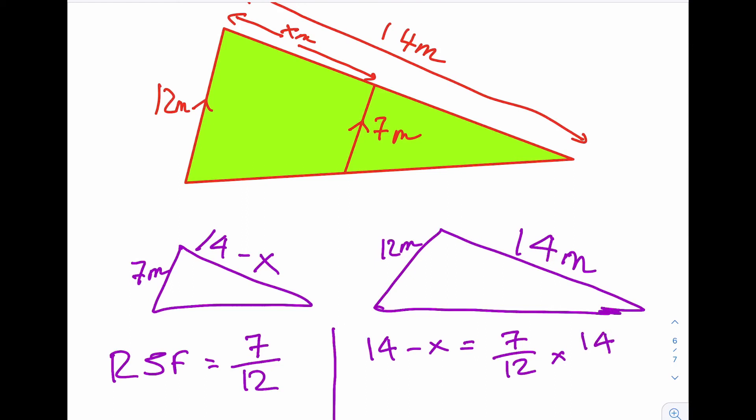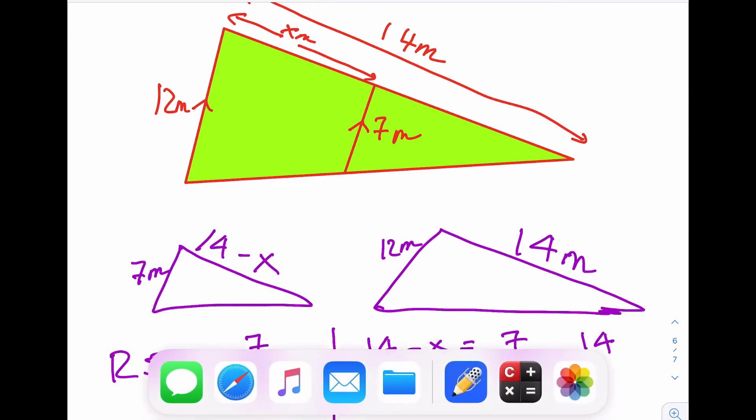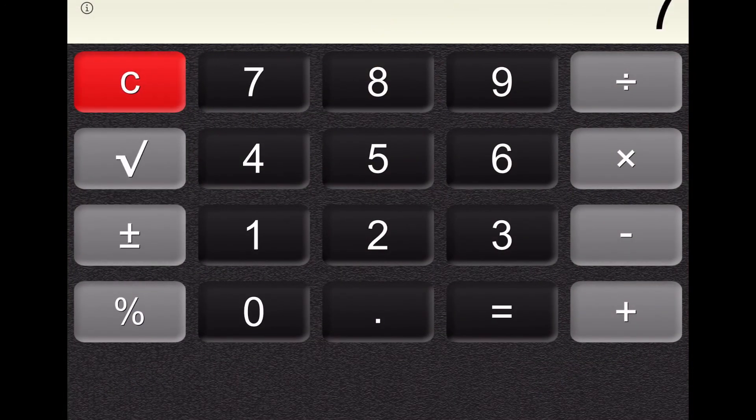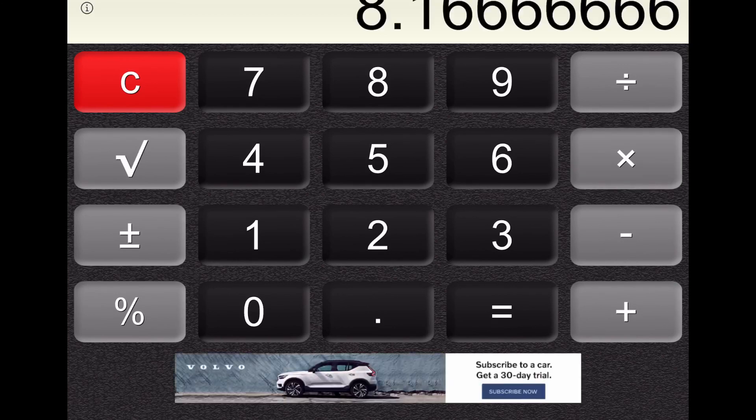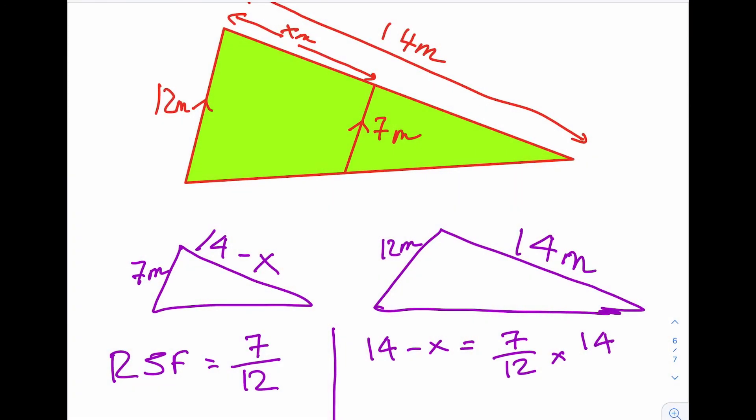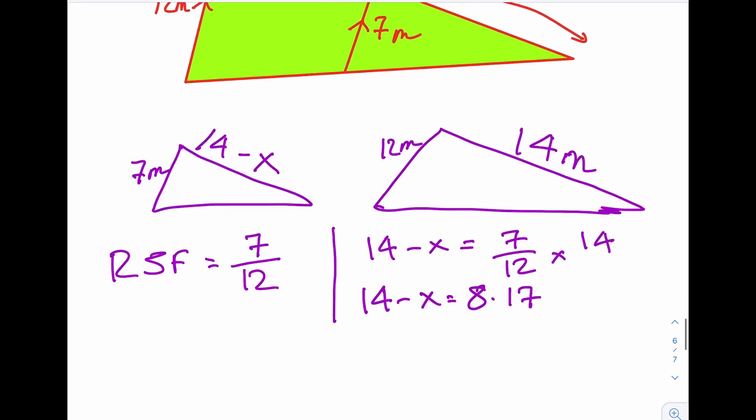we now know that 14 minus X equals 7/12, so scale factor times the same side as it, which is 14. So let's just get a calculator and work out 7/12 times 14. So that's 7 divided by 12 times 14. That's 8.1666 forever. So let's just call that 8.17.